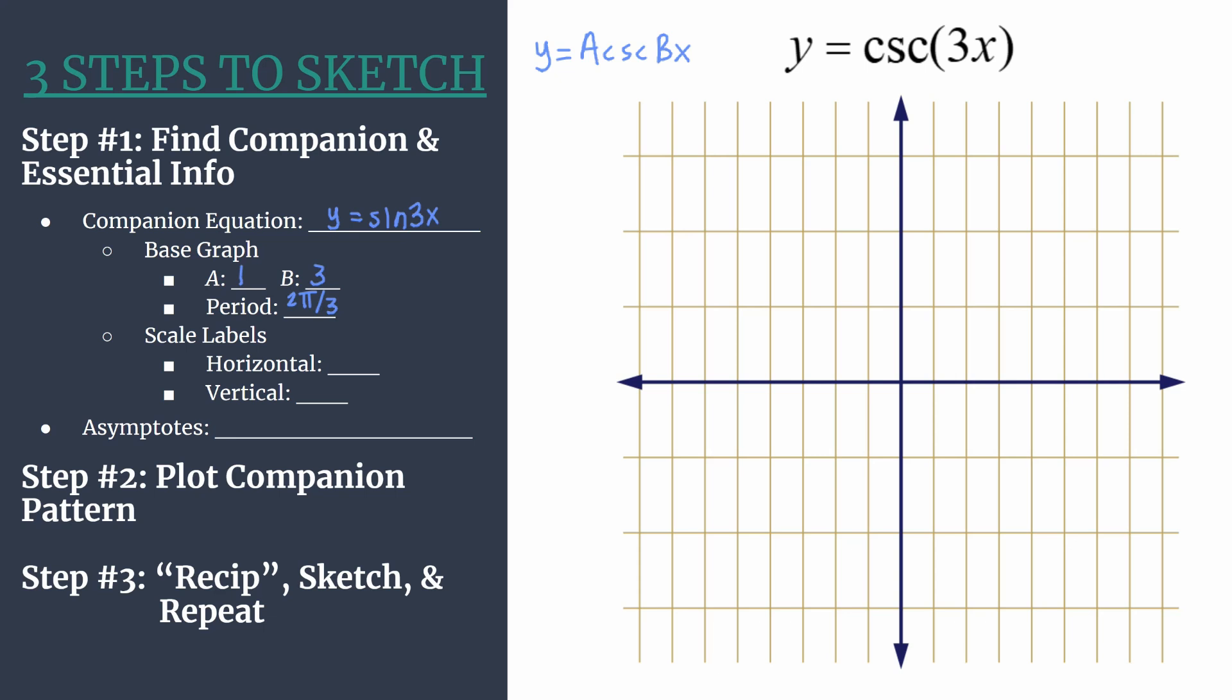We'll take our period and divide by 4 to get our horizontal scale. So 2 pi over 3 divided by 4, or multiplying by 1 fourth. You end up with 2 pi over 12 or pi over 6 as your horizontal scale.